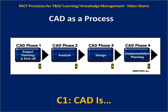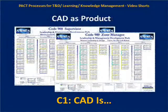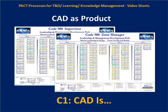In phase four, those gaps are prioritized and priced for development and/or acquisition as appropriate. The products of CAD include learning and development paths, or training and development paths, or learning continuum, or developmental road maps — these have been named many different things by my clients.